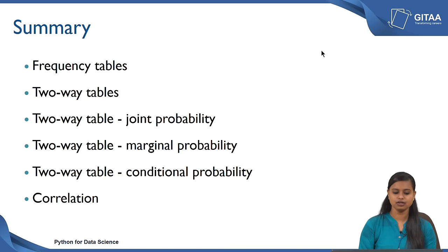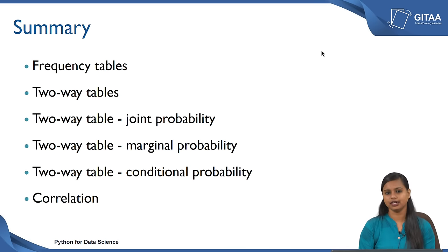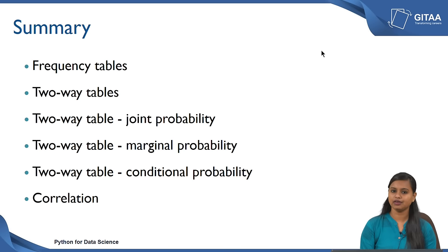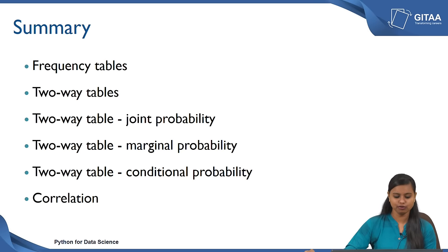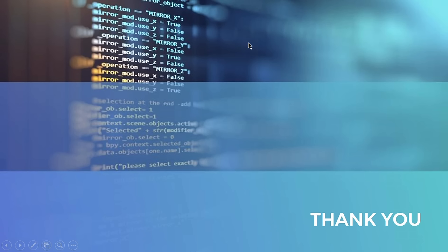Now we have come to the end of the session. Let us summarize whatever we have seen in this lecture. We started with creating frequency tables to check the frequency of each category in a categorical variable. Then we looked at the relationship between two categorical variables using two-way tables. We also saw how to convert the two-way table into joint probabilities, marginal probability, and conditional probability. Finally, we saw how to check the relationship between two numerical variables using a measure called correlation. Thank you.